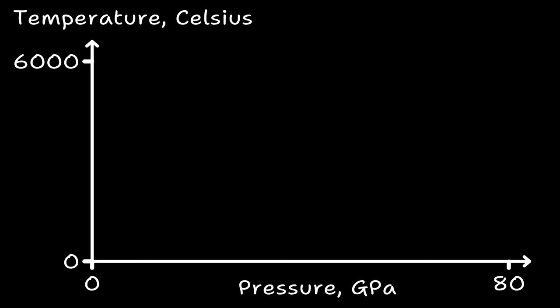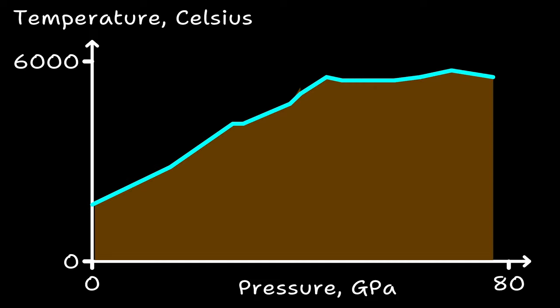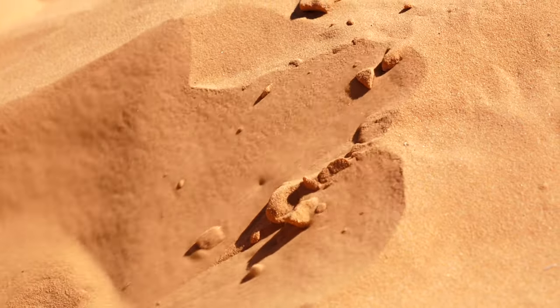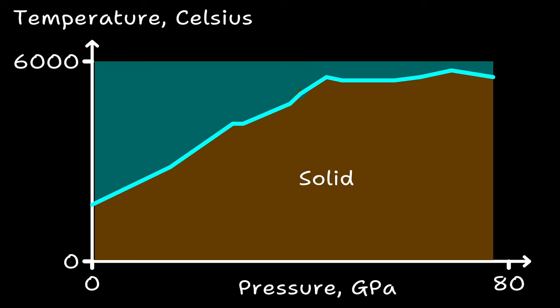Pressure is towards the right in gigapascals and temperature is upwards. If we pick a pressure, we can plot the melting point of silica at that pressure. So here we have room pressure and the melting point is 1700 Celsius. As we increase the pressure, the melting point of silica increases. This makes sense because the pressure squeezes the molecules together. At temperatures below the melting point, silica is solid, like sand. At temperatures above the melting point, silica is liquid, like magma. We are at 70 gigapascals and 2000 Celsius. We can see that silica will clearly be solid at these conditions.